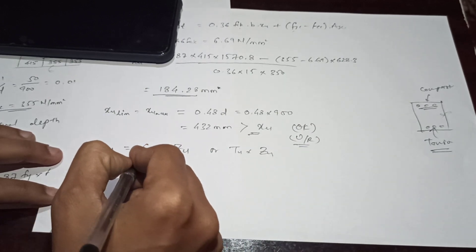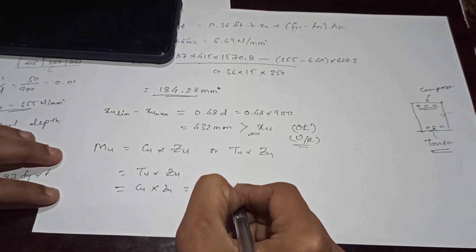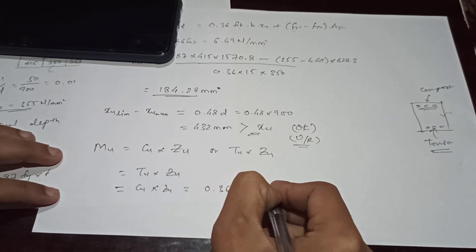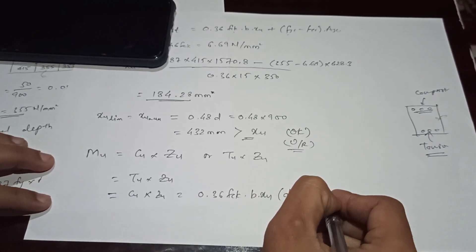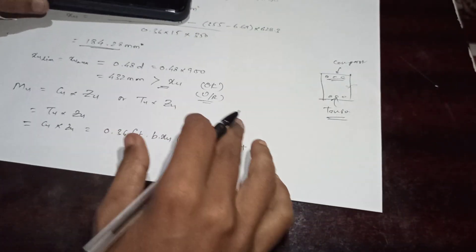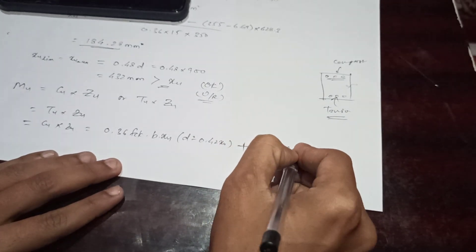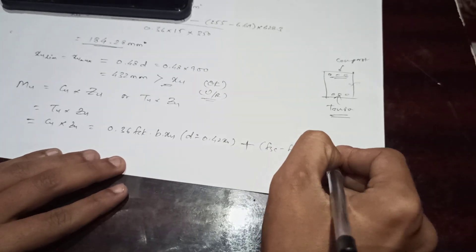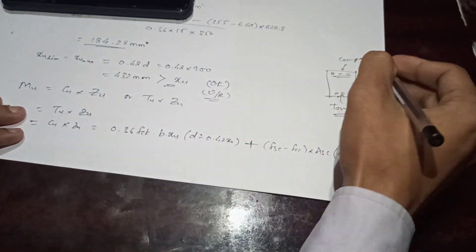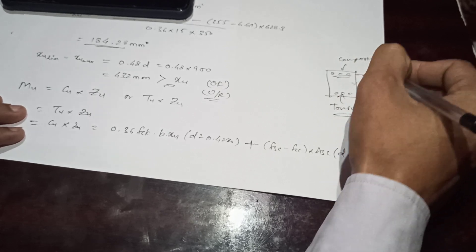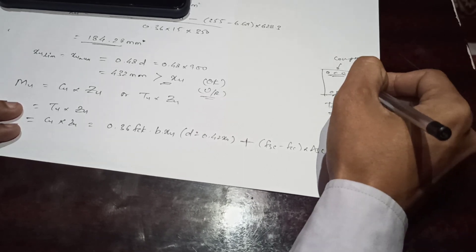Now we calculate the moment of resistance. The moment of resistance MR equals the moment due to the concrete compression force plus the moment due to the compression steel. That is: MR = 0.36 × fck × b × XU × (d − 0.42 × XU) + (FSC − FCC) × ASC × (d − d'), where (d − d') is the lever arm for the compression steel.